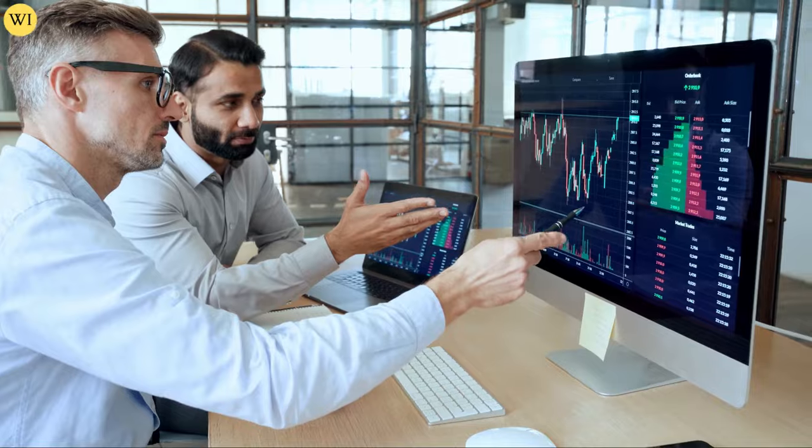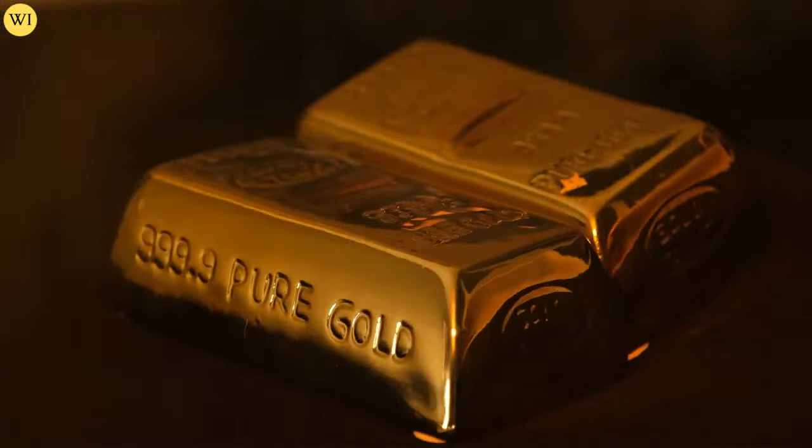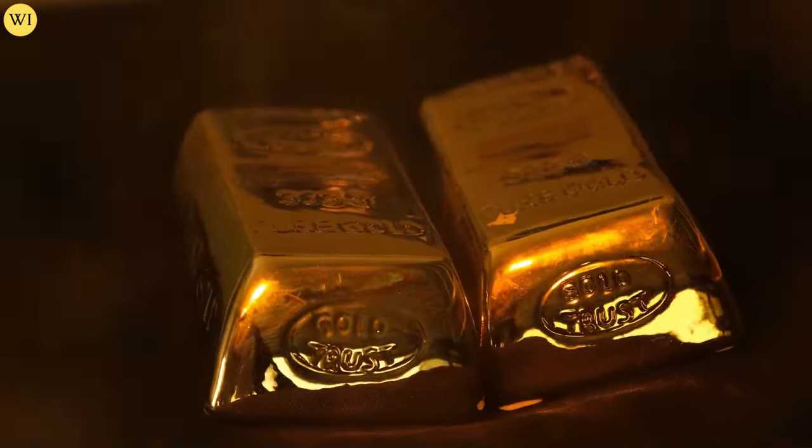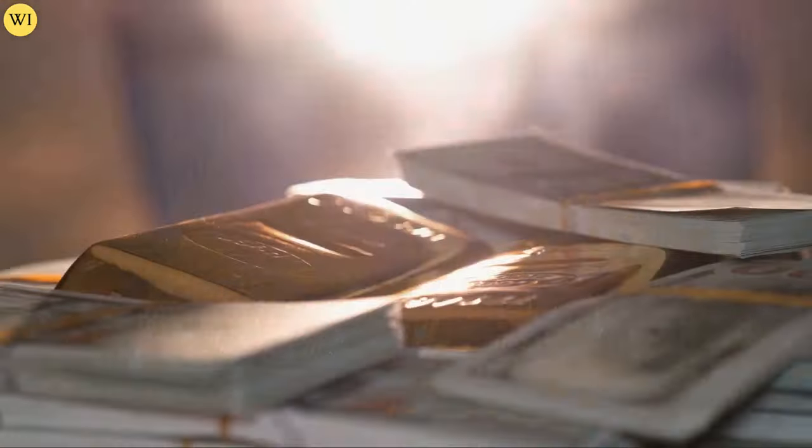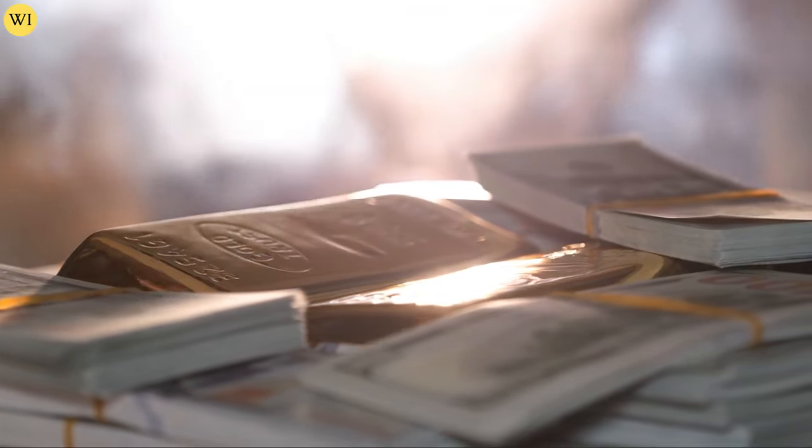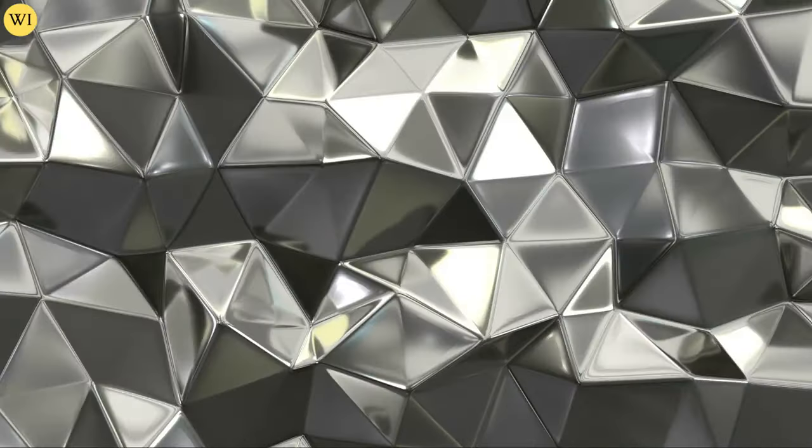And when you realize guys like Rick Rule have said for a very long time, and he still says it, that the entire gold allocation from the Harvard Endowment Fund down to Joe Sixpack is less than one half of 1%. Just shifting one or 2% of those assets into gold and silver. I think that is kind of the double whammy.